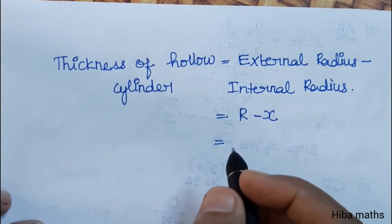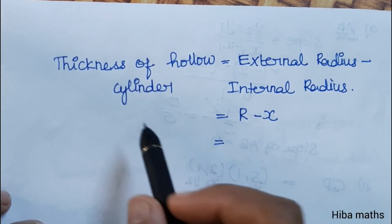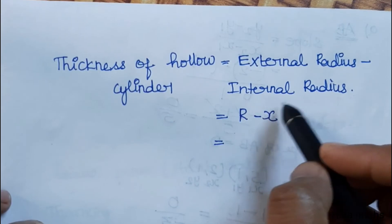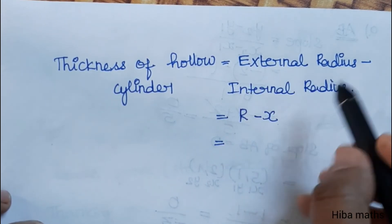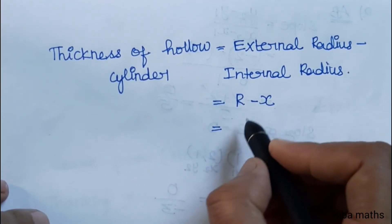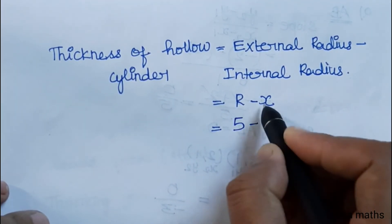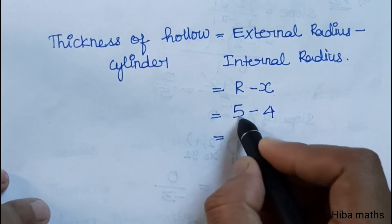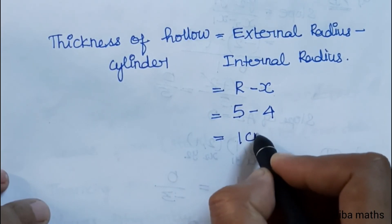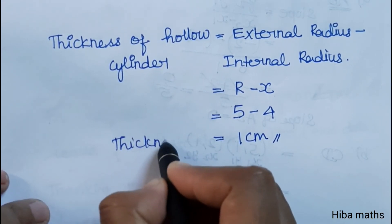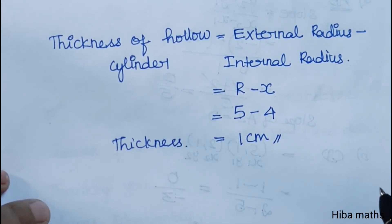In the next step, the thickness of the hollow cylinder equals external radius minus internal radius. External radius is 5 and internal radius is 4, so 5 minus 4 equals 1. Therefore the thickness is equal to 1 centimeter. Hope everyone found this easy to understand — thank you so much for watching.